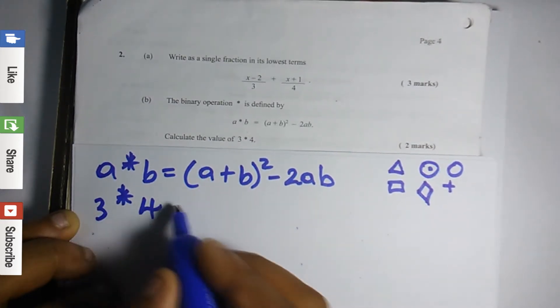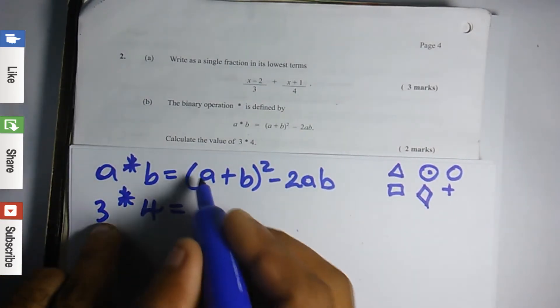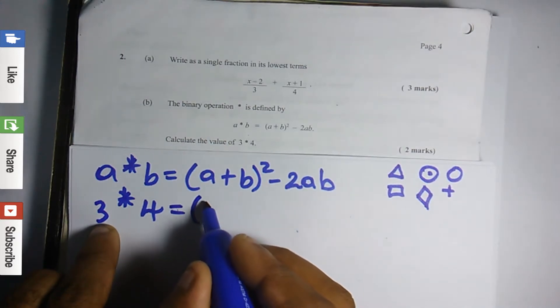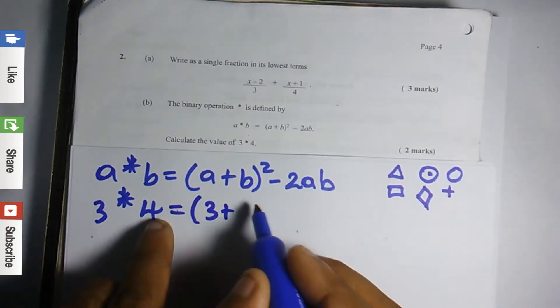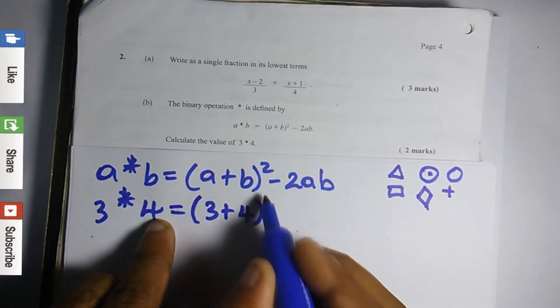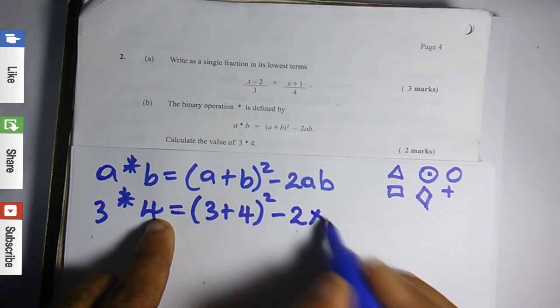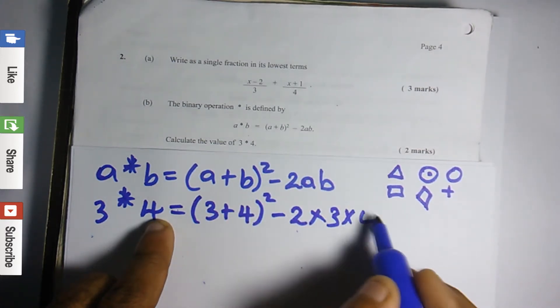So 3 asterisk 4 equals, remember, a is 3, so it's bracket 3 plus b is 4, close bracket squared, minus 2 times 3 times 4.